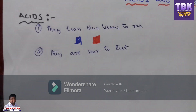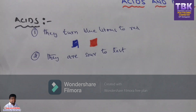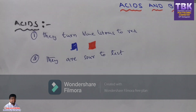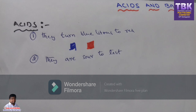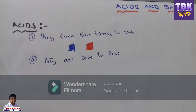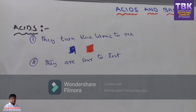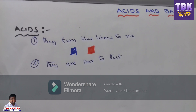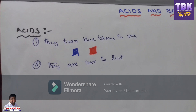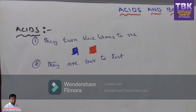The second property of acids is they are sour to taste. Acids are sour to taste. Lemon is an example for an acid solution. They are sour to taste.